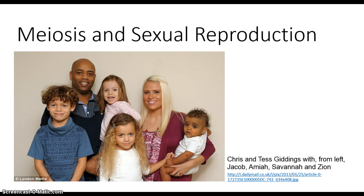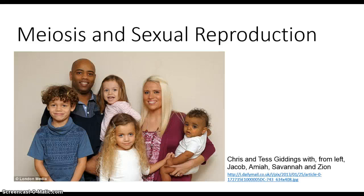Today I want to talk about how meiosis and sexual reproduction contribute to variation in human and other animal populations. We see this with the Giddings family, that their Nigerian father and English mother have made a family whose characteristics lie at every stage in between the extremes of their parents' characteristics. Through the process of meiosis that precedes sexual reproduction, you have all sorts of different DNA arrangements possible from the parents' genes to make the genetics of the next generation.